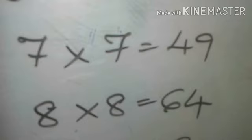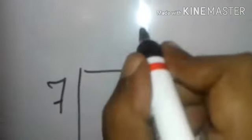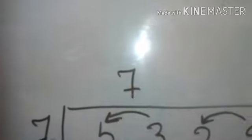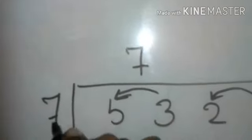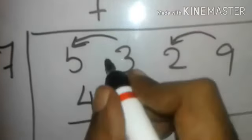Yep. Seven into seven is 49. Remember, this number that you write here should be the same number that you write here. You are not supposed to write 76 or 78. So the same number. Seven into seven is 49. Subtract it.